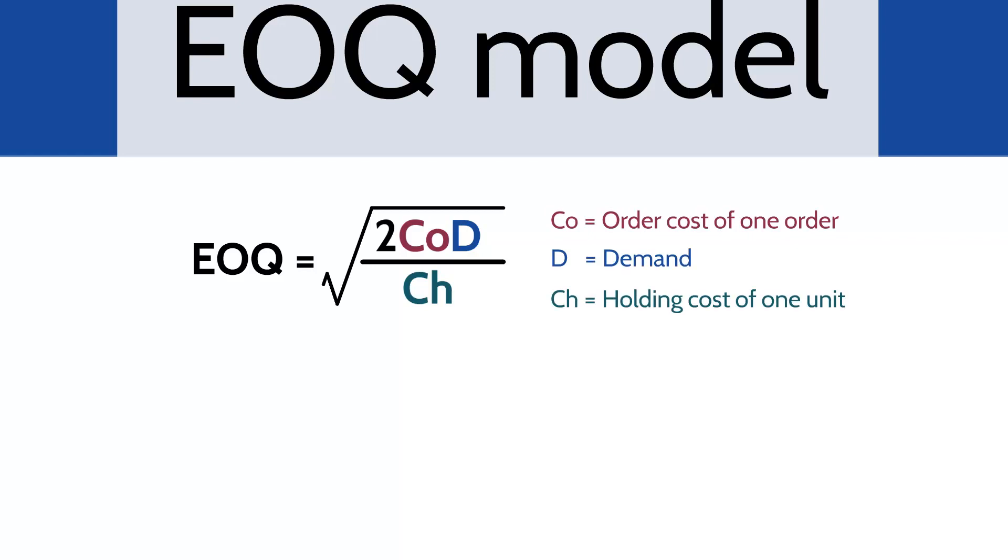It is derived by the following formula. EOQ is equal to the square root of 2 times CO times D all over CH. I'm sure you're wondering what those variables mean. Well, they're quite simple really. The first of them, CO, is the order cost of one order. Remember when I mentioned about how when you order something online you have a postage fee and that postage fee might be two pounds. This is what the CO refers to. It refers to the cost of actually ordering the item and not the cost of the item itself.